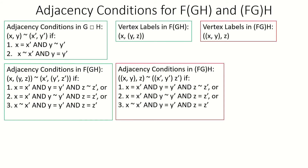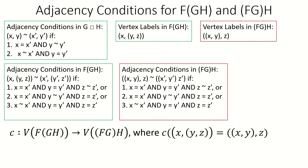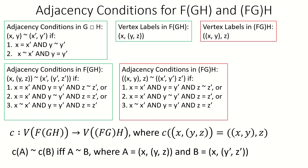Those are the exact same conditions for adjacency as in f(gh). If you recall our bijection c defined as before, this implies that two vertices are adjacent if and only if their images under c are adjacent, showing that c is an isomorphism and proving that the Cartesian product is associative up to isomorphism.